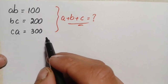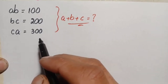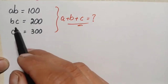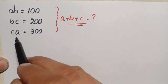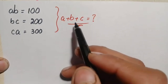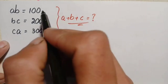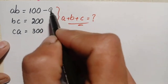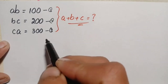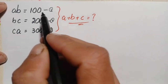Hello everyone, welcome. How to solve this interesting algebra math problem: a times b is equal to 100, b times c is equal to 200, c times a is equal to 300. We will find the value of a plus b plus c. Let us label these as equation number one, equation number two, and equation number three.